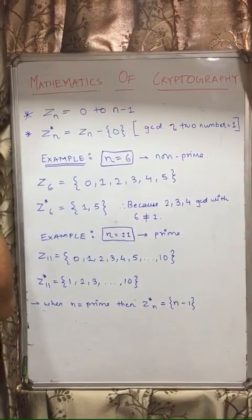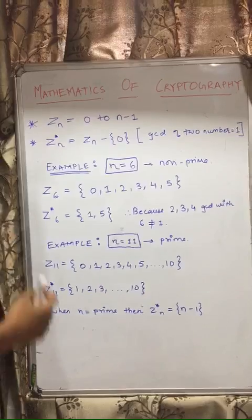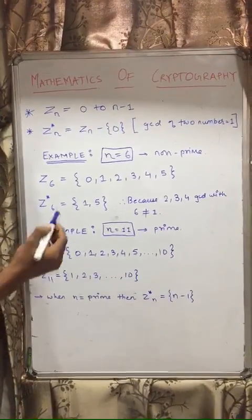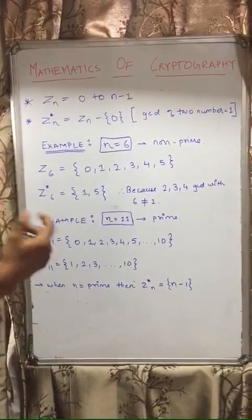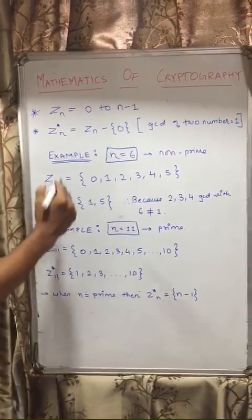Hello friends, today I'm going to teach you about mathematics of cryptography. Now first of all, we have n which will be equal to any integer number. So first you have to find Zn, so it will be equal to Zn = 0 to n minus 1.